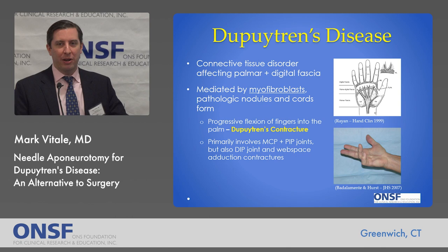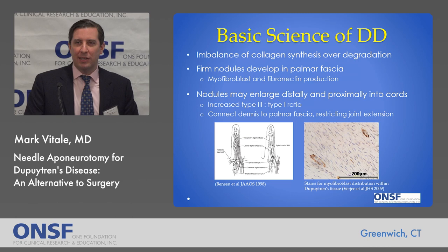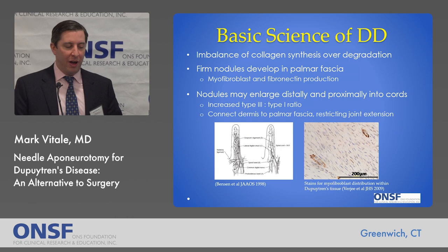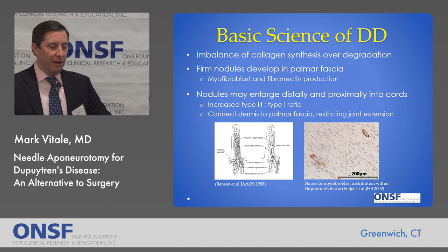It primarily involves the MCP and PIP joints, but there are also web space contractures, adduction contractures, thumb cords, and various different patterns. The basic science of Dupuytren's disease is essentially an imbalance of collagen synthesis over degradation — more collagen is produced than is broken down. Myofibroblast and fibronectin production is increased, which forms these nodules in the palm of fascia.